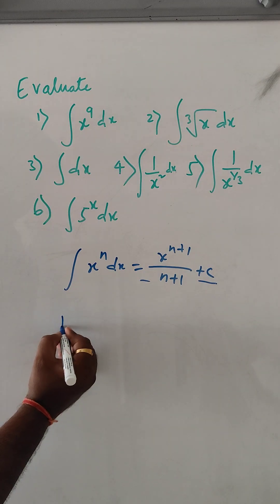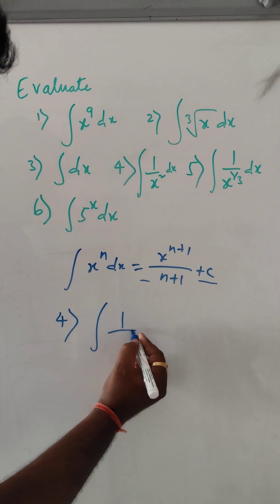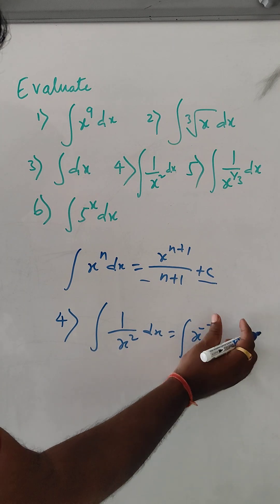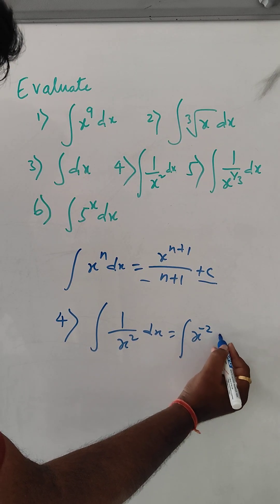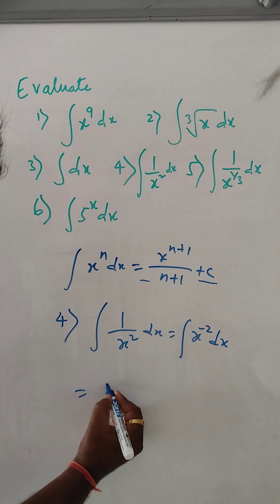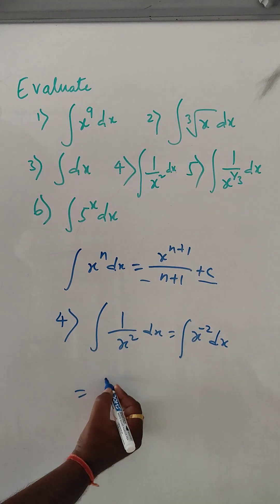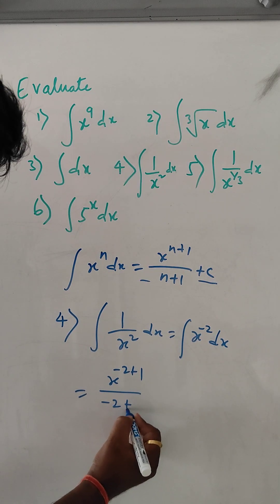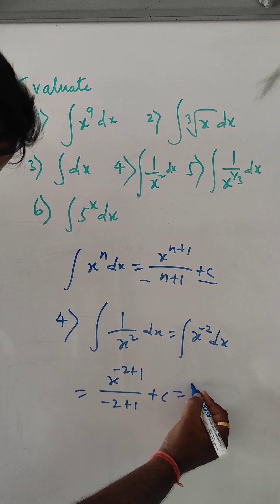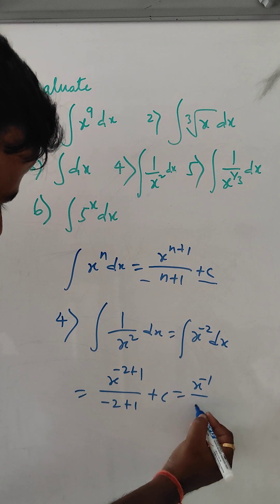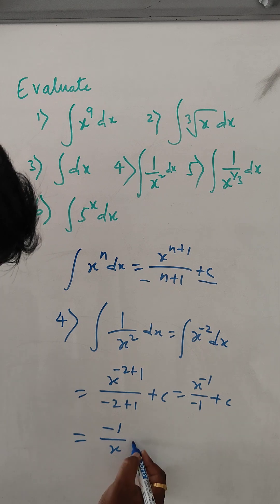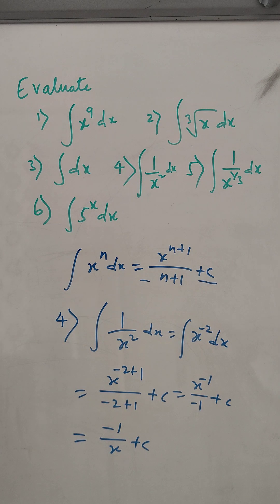Problem number 4. It is integral of 1 by x to the power 2 dx, which can be written as x to the power minus 2 dx. Based on the formula, x to the power minus 2 plus 1 divided by minus 2 plus 1 plus c. This gives minus 1 by x plus c. That is the solution for problem number 4.